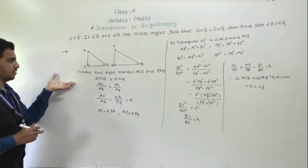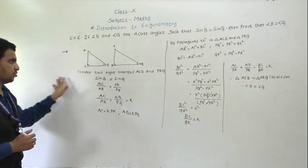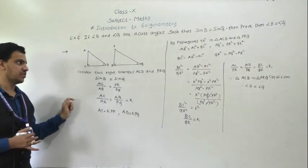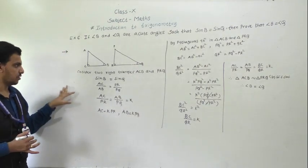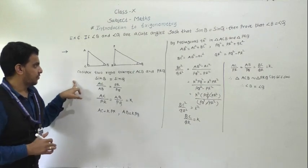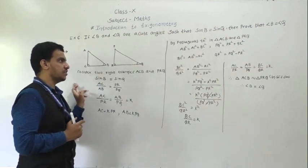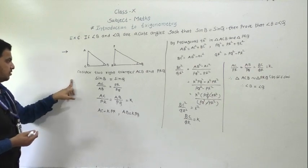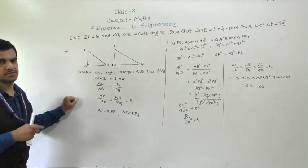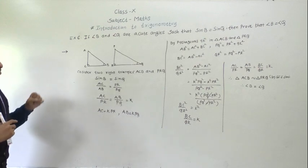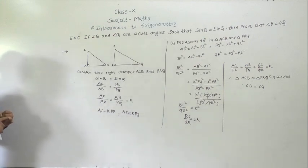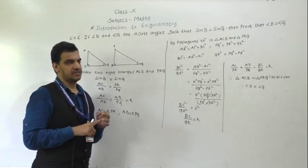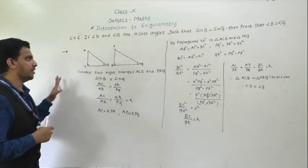These were examples based on trigonometric ratios and relations between trigonometric ratios. In the next video we will take the next topic: trigonometric ratios of some specific angles — that is, the values for 0°, 30°, 45°, 60°, and 90° for all trigonometric ratios.